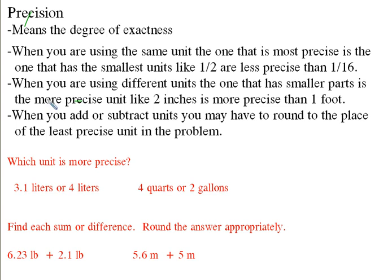What we have here is when you're using the same unit, the one that is most precise is the one that has the smallest units. Like, if you have something that's a half unit, then it's less precise than something that has 1/16th of a unit. So if you have 1 1/2 or 1 1/16, the 1 1/16 is more precise.